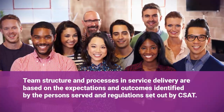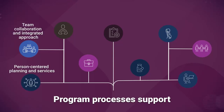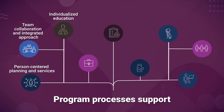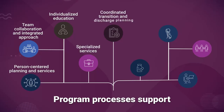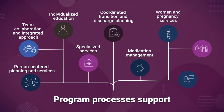Team structure and processes and service delivery are based on the expectations and outcomes identified by the person served and regulations set out by CSAT. Program processes support planning and services that are person-centered, team collaboration, and an integrated approach to meeting the goals and needs of the person served. This includes individualized education for the person served and families, support systems, specialized services, and coordinated transition and discharge planning that supports long-term success.